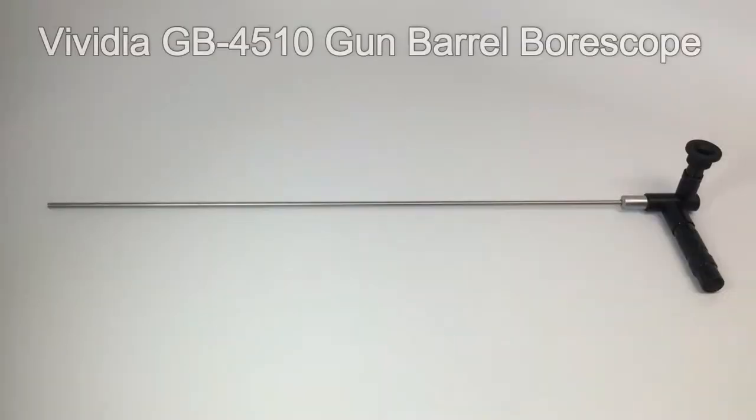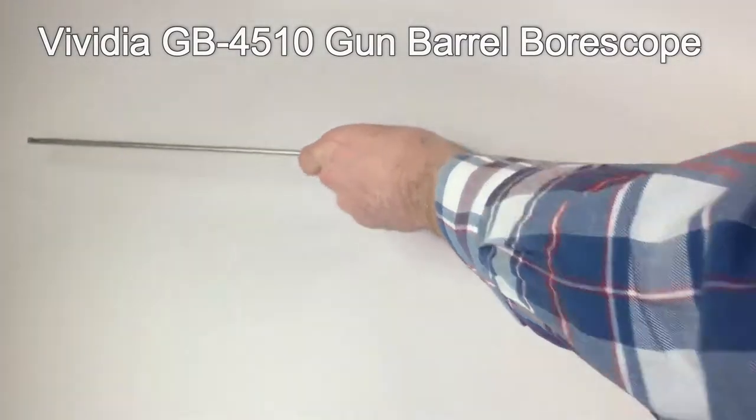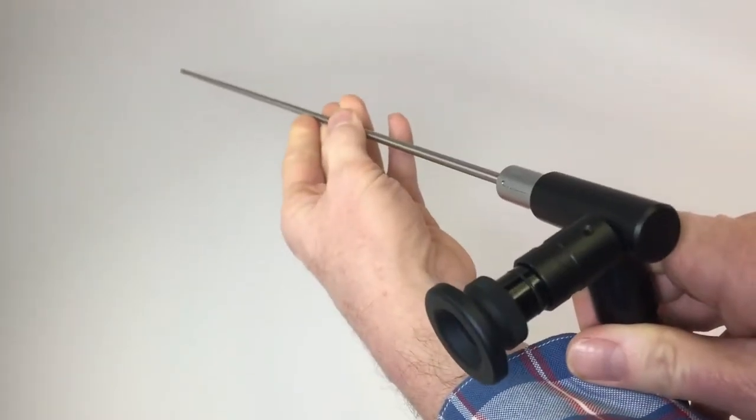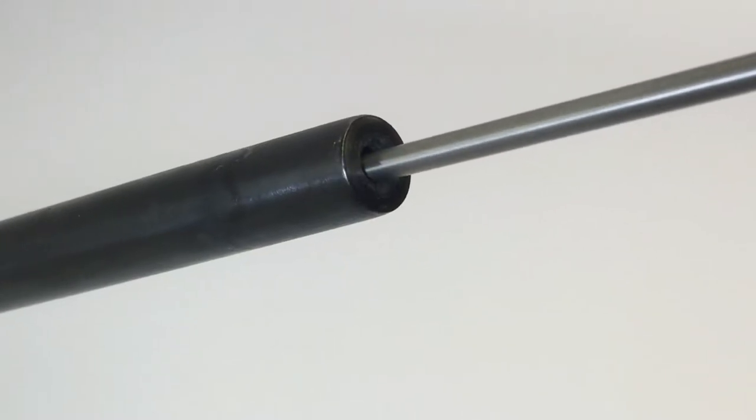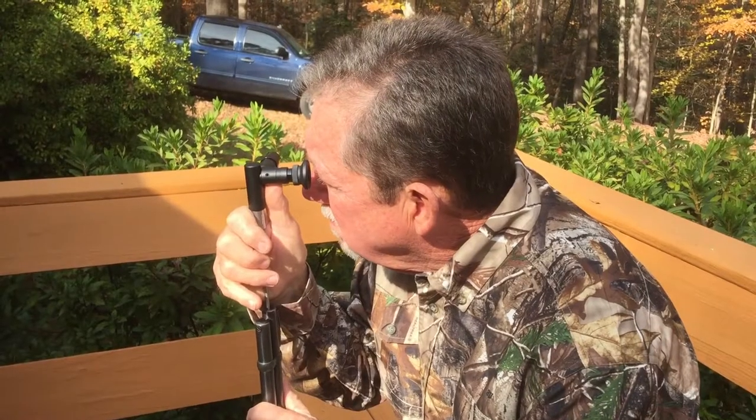The Vividia GB4510 gun barrel boroscope is ideal for inspecting rifle and handgun barrels. Also ideal for industrial straight tubes.